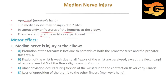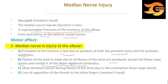Effect of median nerve injury at the elbow: pronation of the forearm is lost due to paralysis of both pronator teres and pronator quadratus. Flexion of the wrist is weak because all flexors of the wrist are paralyzed except flexor carpi ulnaris and the medial half of flexor digitorum profundus. There is ulnar deviation during flexion of the wrist due to contraction of flexor carpi ulnaris, and loss of opposition of the thumb.